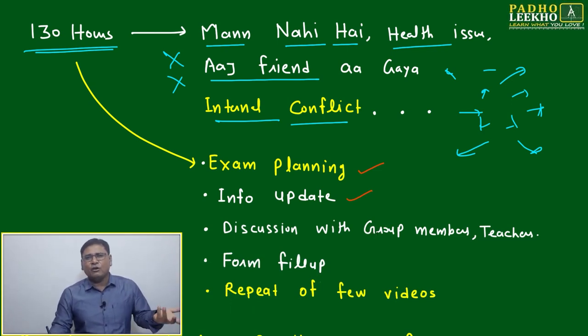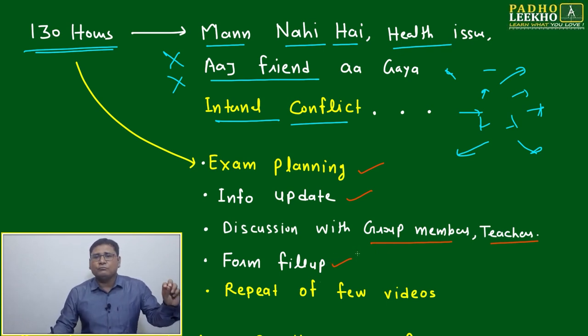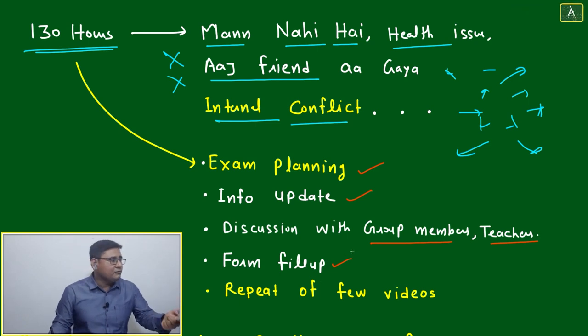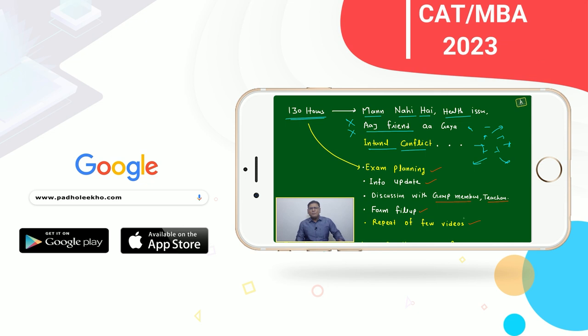Discussion with group members, teachers, mentors. Form fill-up - maybe you'll fill many forms this time. You can utilize time for form filling, gathering information about colleges - what is the process, if I'm applying what will be the fee, how will it be. Repeat of the few videos - many videos, whatever you'll get, maybe after one time it won't be sufficient. You can repeat it. You have 130 hours.